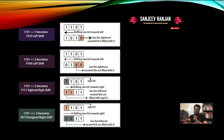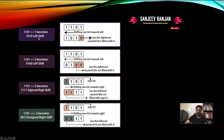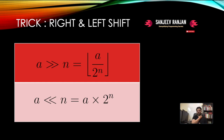Left shift moves bits to the left and replaces vacated positions with zero. Right shift moves bits to the right and the significant bits on the left get converted to zero. There's a very important trick to remember: right shifting by n is equivalent to integer division — floor(a / 2^n). So right shifting by 1 is a / 2.